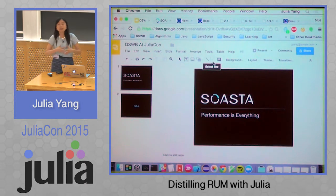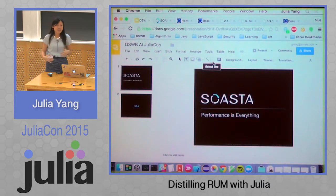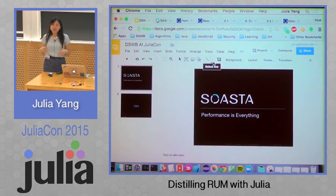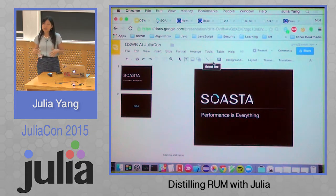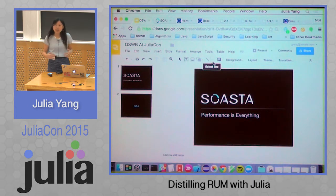So the talk is going to be in three sections. The first part is I'm going to give you a really brief outline of the tools that we're using, and then I'm going to show you a bunch of stuff that we're using with IPython and Julia. And at the end, if there's some time, hopefully there will be time for questions.